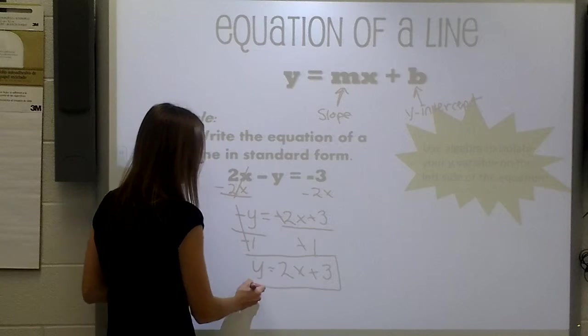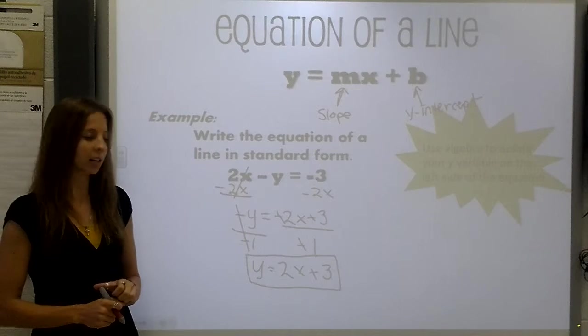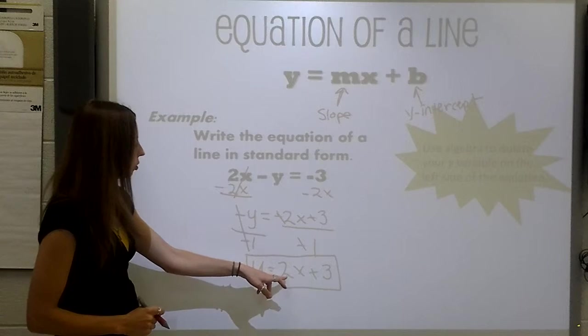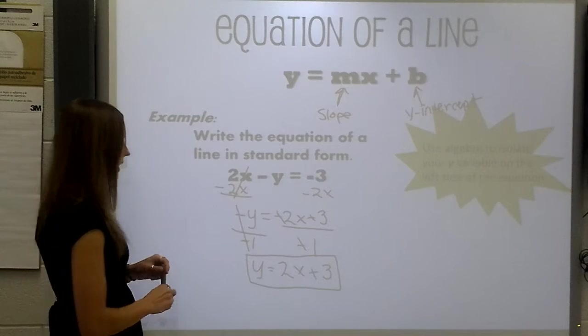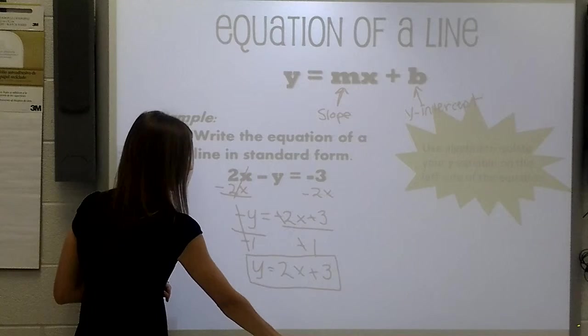We now have a line in standard form. 2 would be our slope and a positive 3 would be our y-intercept if we are looking at a graph.